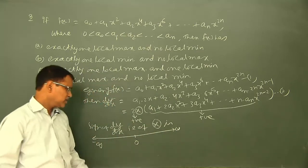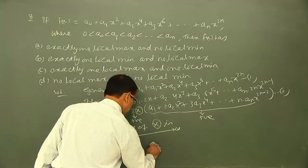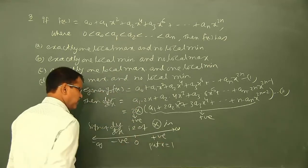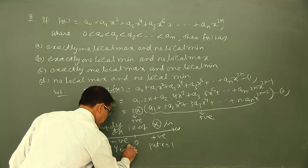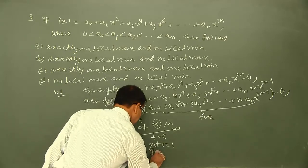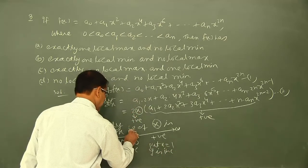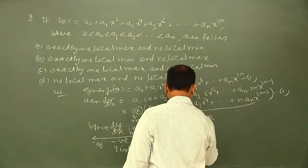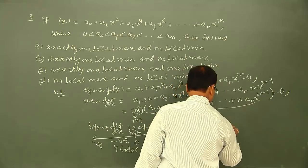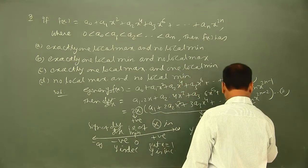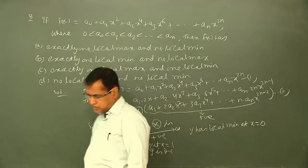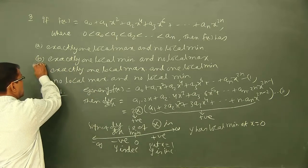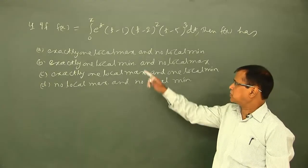Setting x = 0 divides the number line into two parts. Placing x = 1 (positive side): dy/dx is positive, so y is increasing. On the negative side, dy/dx is negative, so y is decreasing. Decreasing then increasing means there is a local minimum at x = 0. Final conclusion: y has a local minimum at x = 0, so the function has exactly one local minimum and no local maximum.